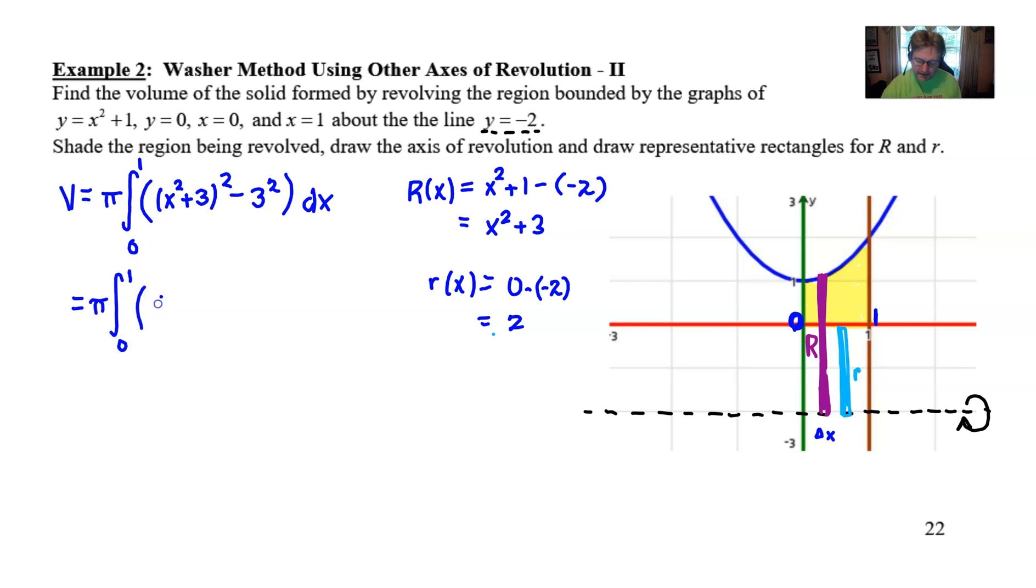So if we expand out the x squared plus 3, we would get x to the fourth plus 6x squared plus 9. And then we would have a subtraction after we square the 2, which is 4. Remember, this minus is not involved into that squaring process at all. So we would actually have x to the fourth plus 6x squared plus 9 minus 2 squared, which is 4.